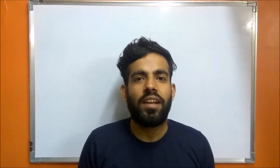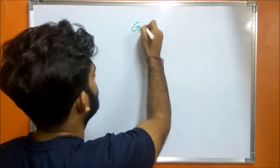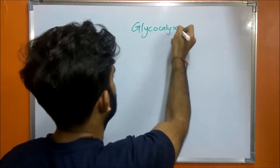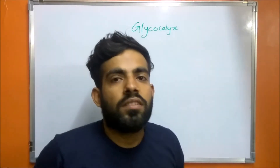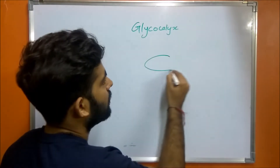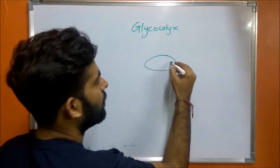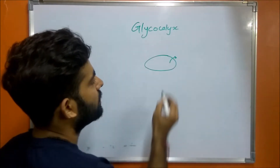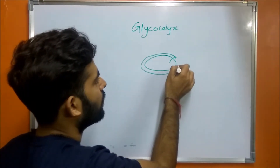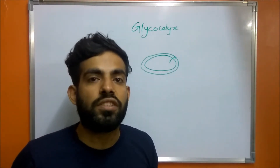Hello everyone, I am Sagar Banushali and I am going to talk about glycocalyx. If we take a bacterial cell, glycocalyx is the substance that is secreted from inside the cell to the outside, which is further deposited on the cell wall. This glycocalyx is a viscous and gelatinous polymer.